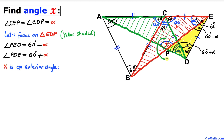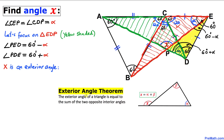We can see that angle X is an exterior angle. Recalling the exterior angle theorem: the exterior angle of a triangle equals the sum of the two opposite interior angles. In our case, angle X equals the sum of the two opposite interior angles alpha and beta.